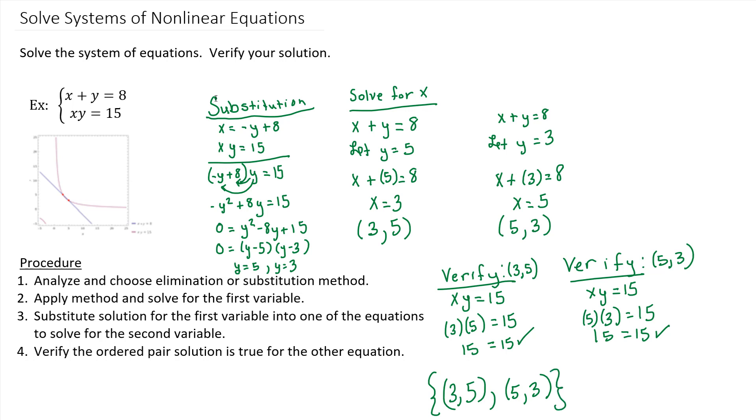I'm left with a solution set of two ordered pairs, which makes sense if you go back to the graph and you see where that line intersects the hyperbola, it intersects at two places. So it makes sense that we have two solutions.